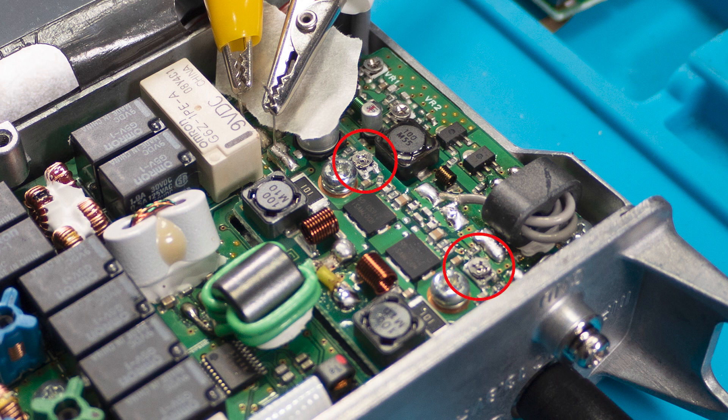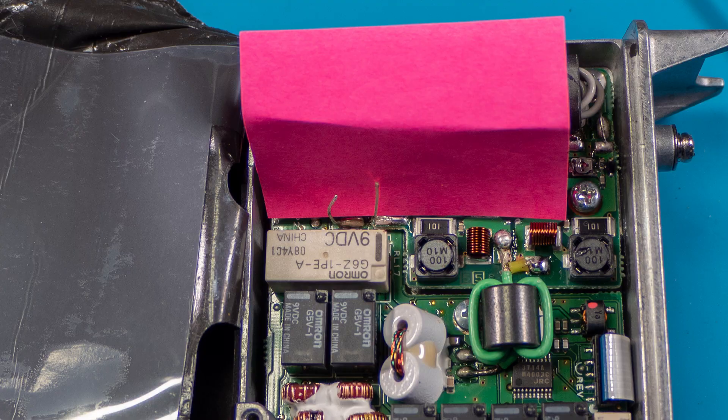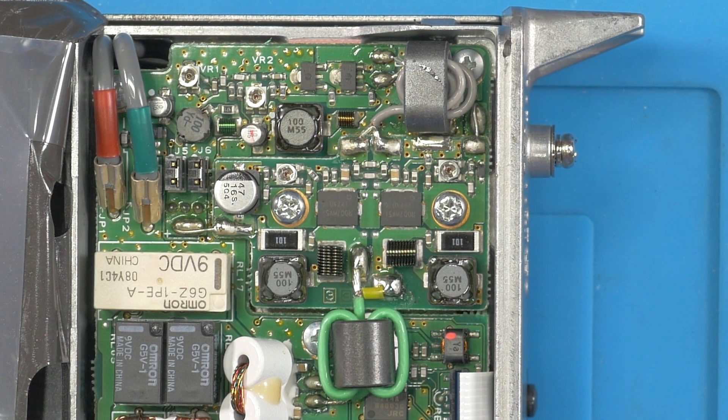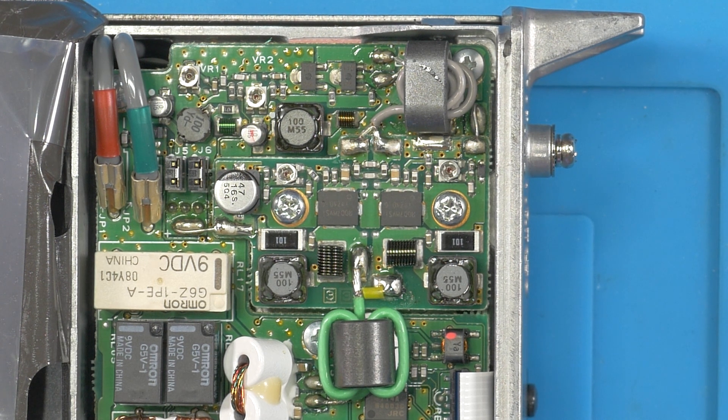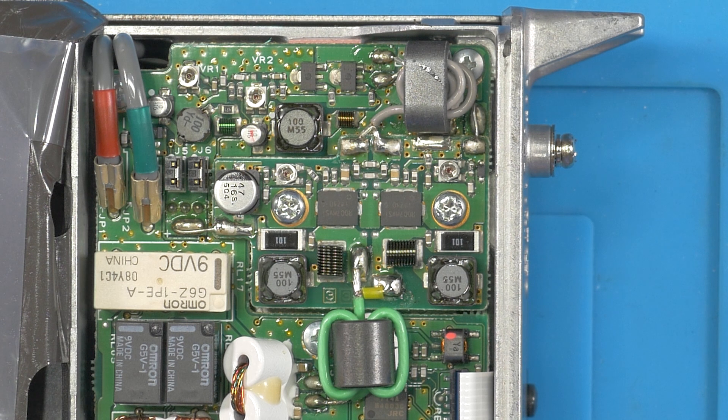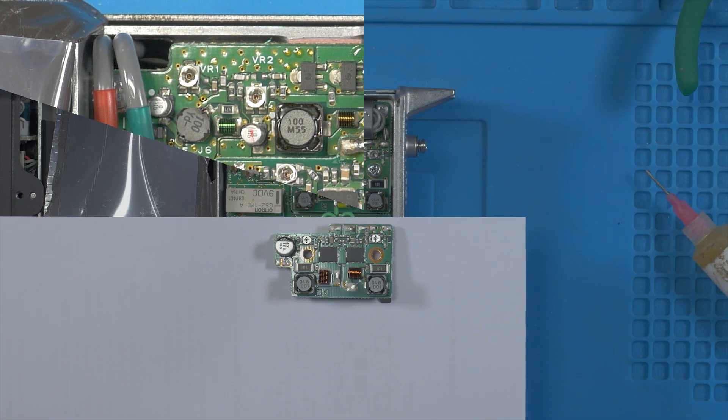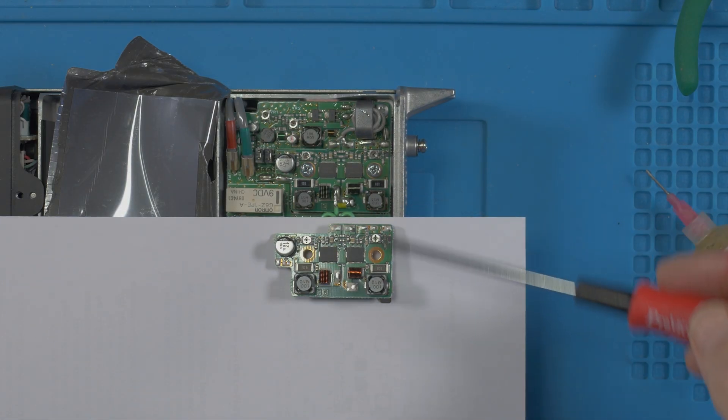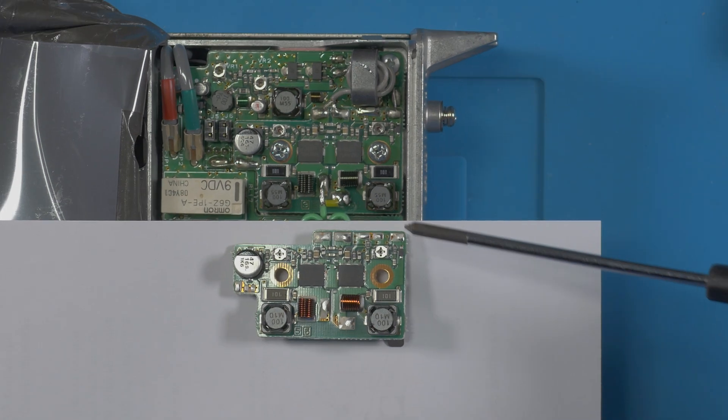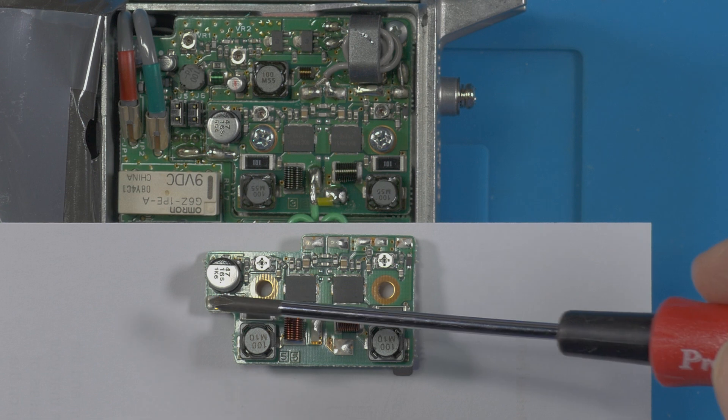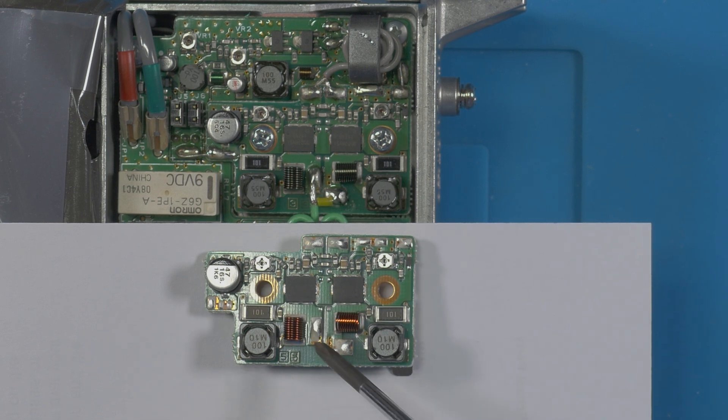I'm now going to get ready to do some desoldering, but before I do that I'm going to ground myself and also have a look at the new board and see how that compares to what I'm seeing inside the radio. I have my old board and my new board next to each other and I can just confirm to myself that there are four pads here, one pad there and two pads here.